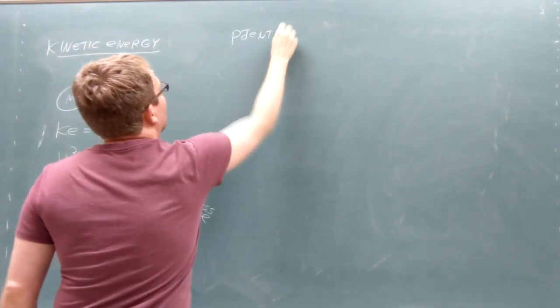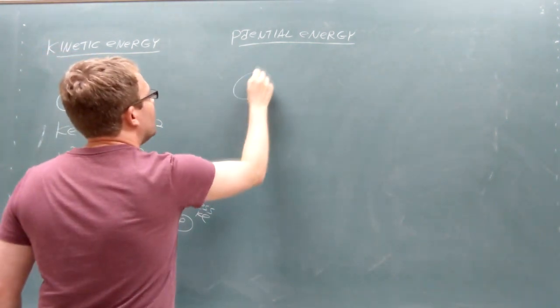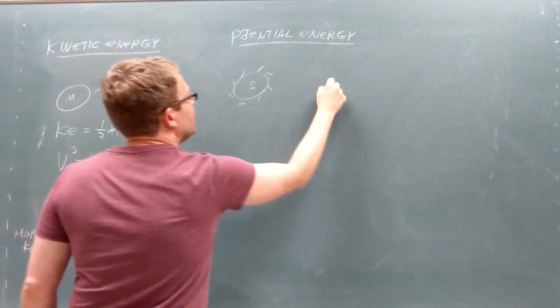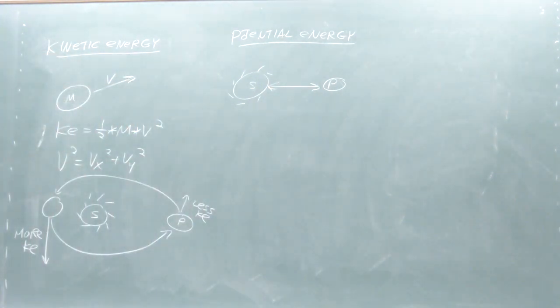The second kind of energy we need to think about is called potential energy. Potential energy is manifested as two objects interacting through a force. In this case, we are interested in the gravitational potential energy between the planet and the star.